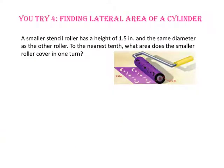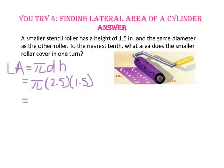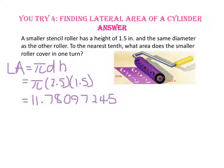Pause the video and do you try number four. A smaller stencil roller has a height of 1.5 inches and the same diameter of 2.5 inches. To the nearest tenth, what area does the smaller roller cover in one turn? Lateral area equals pi times diameter times height: 2.5 times 1.5 is 3.75, times pi is approximately 11.78. Rounded to the nearest tenth, the roller covers approximately 11.8 square inches.